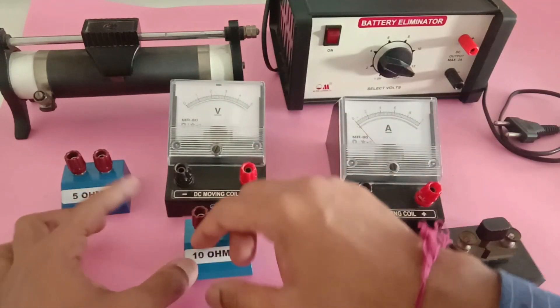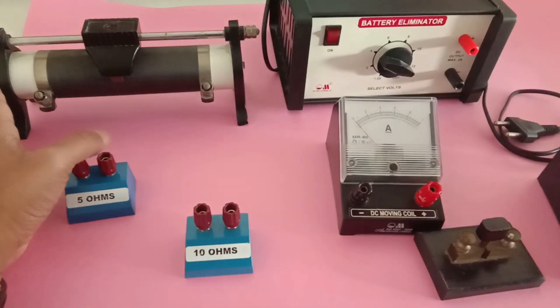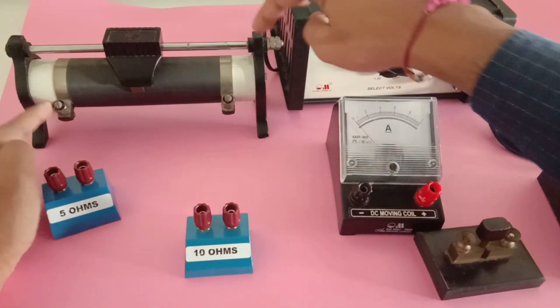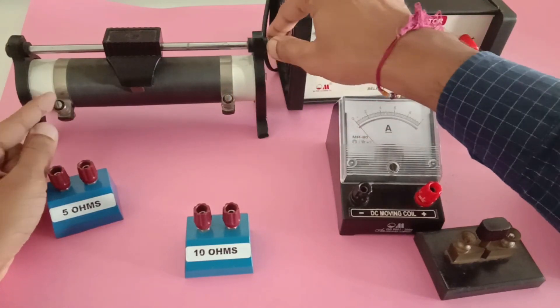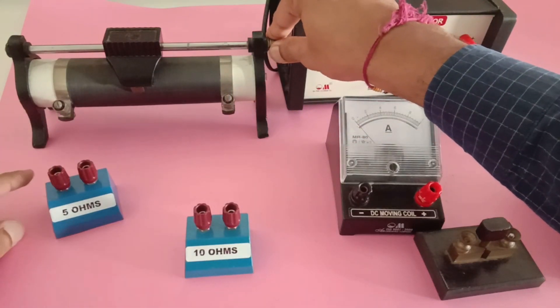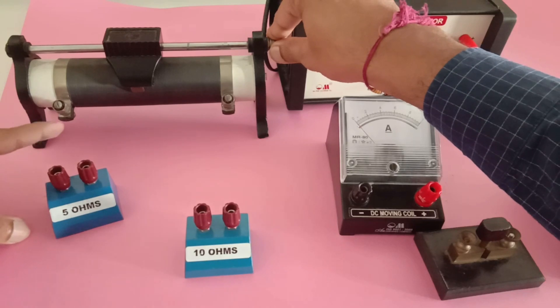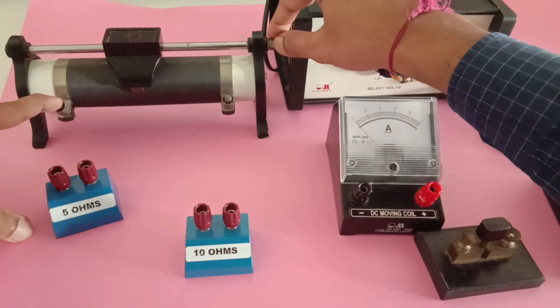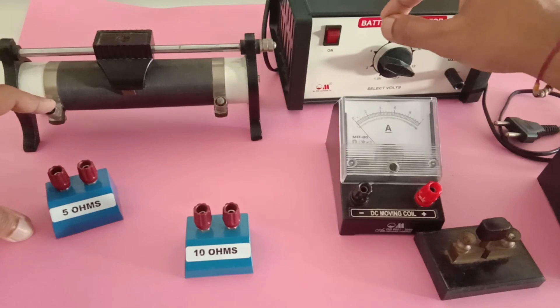Now let's talk about this rheostat. This rheostat has three knobs. We are going to use these two knobs. I will connect this end of the resistor here and this end of the rheostat will be connected elsewhere.